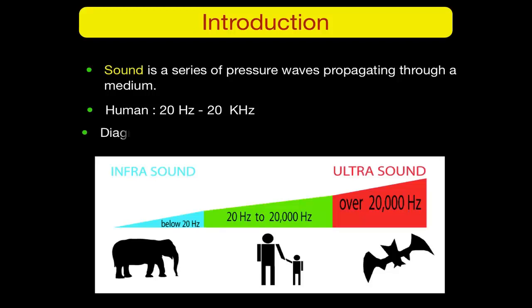In diagnostic ultrasound, we are utilizing millions of cycles per second — specifically 2 to 15 MHz, or million cycles per second — far above the human ability to hear.